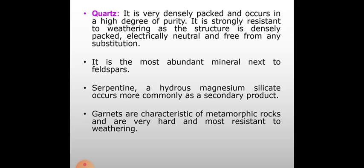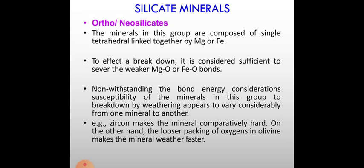Serpentine, a hydrous magnesium silicate, occurs more commonly as a secondary product. Garnets are characteristic of metamorphic rocks and are very hard and most resistant to weathering.